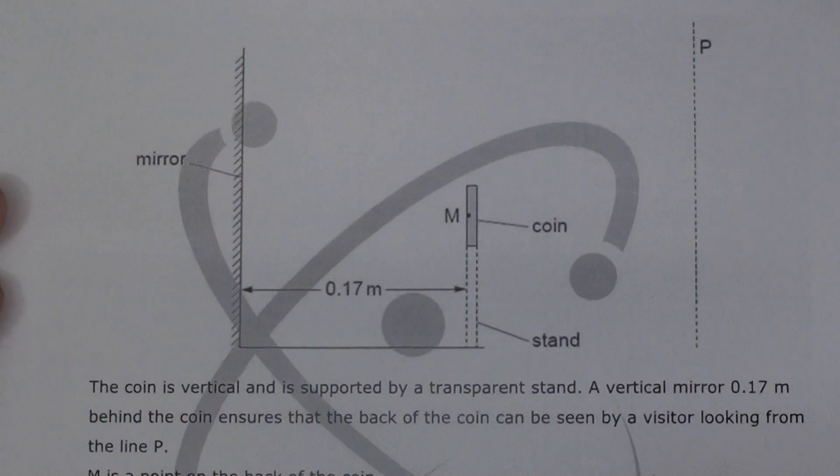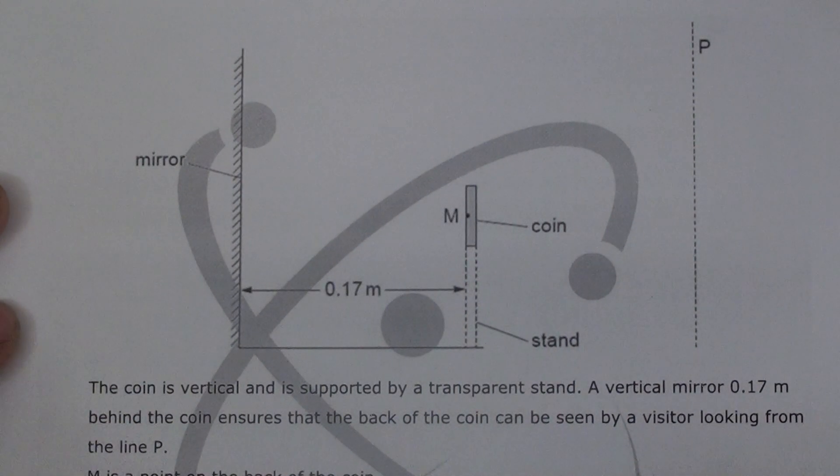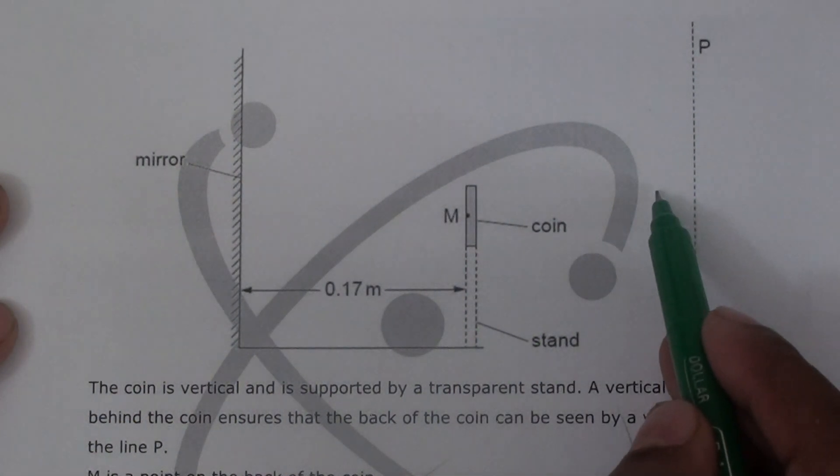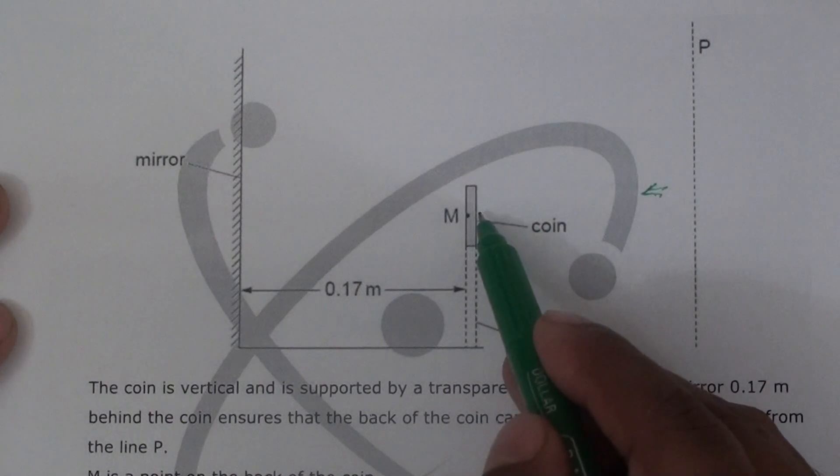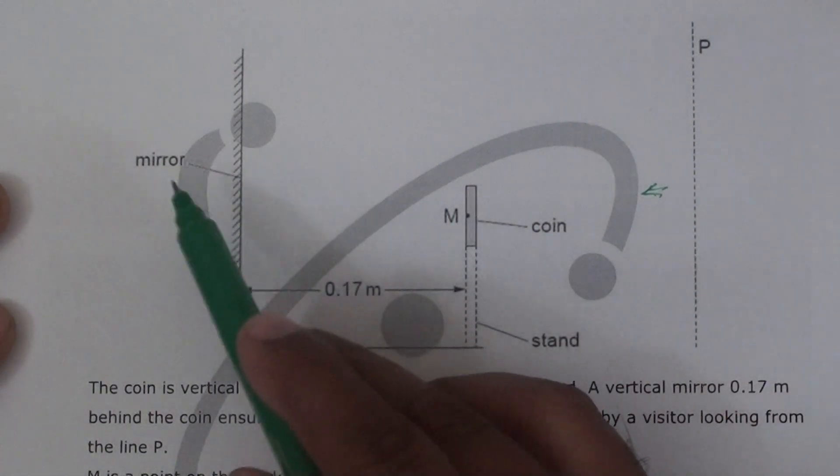An old coin is placed in a museum. I will show you the picture directly. If you are observing from here, you can easily see the front of it, and the back of it is facing the mirror.